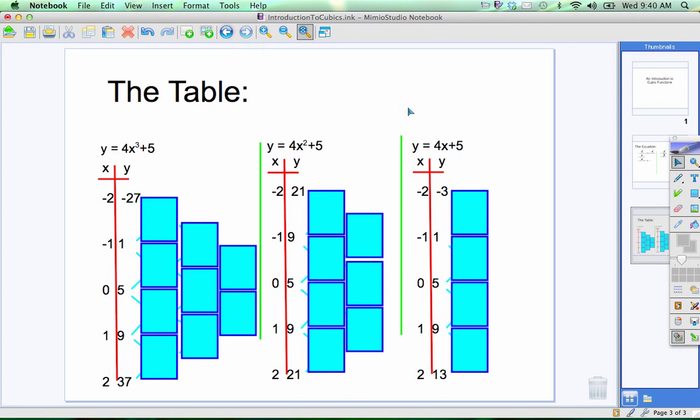Now, in the table we'll also see a difference between our different types of equations we've talked about. First off, is when we look at the differences, the rate of change here.